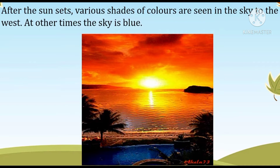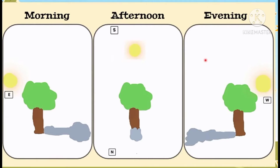At other times, the sky is blue. Now see this picture — we can see morning, afternoon and evening, which describe long shadow and short shadow. In the morning, the sun rises from the east and the shadow of the tree is long. Then in the afternoon, the sun is above the head and the shadow of the tree is short. And in the evening, the sun moves from the east to the west and the shadow is long.